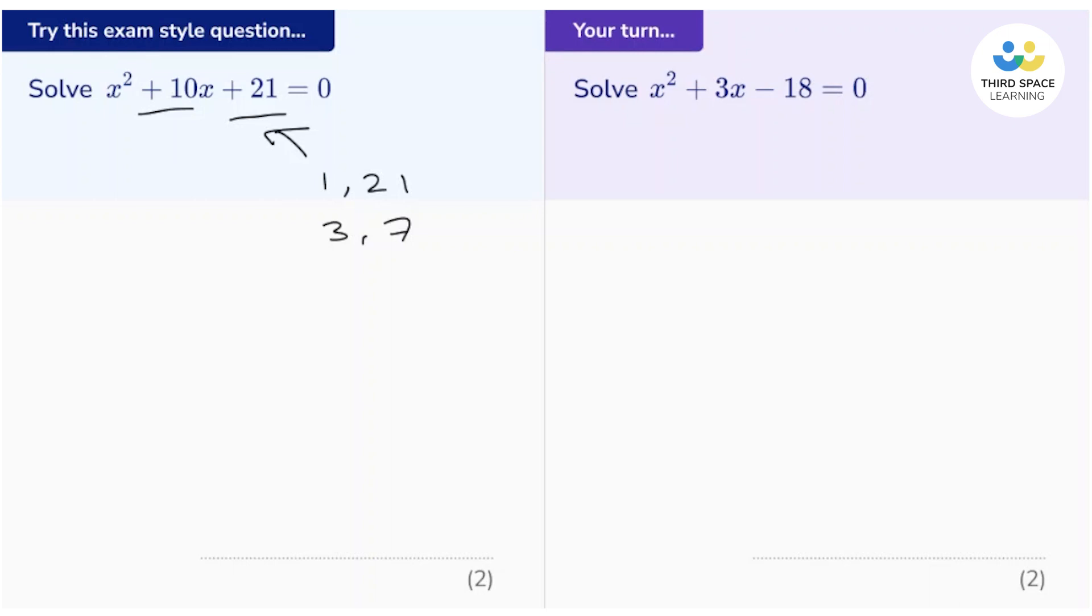And because two numbers are multiplying to give a positive answer, that tells us they both must be positive or they both must be negative. So in this case, we're going to have positive 3 and positive 7. Because if we add those together, we get positive 10, which is what we want.